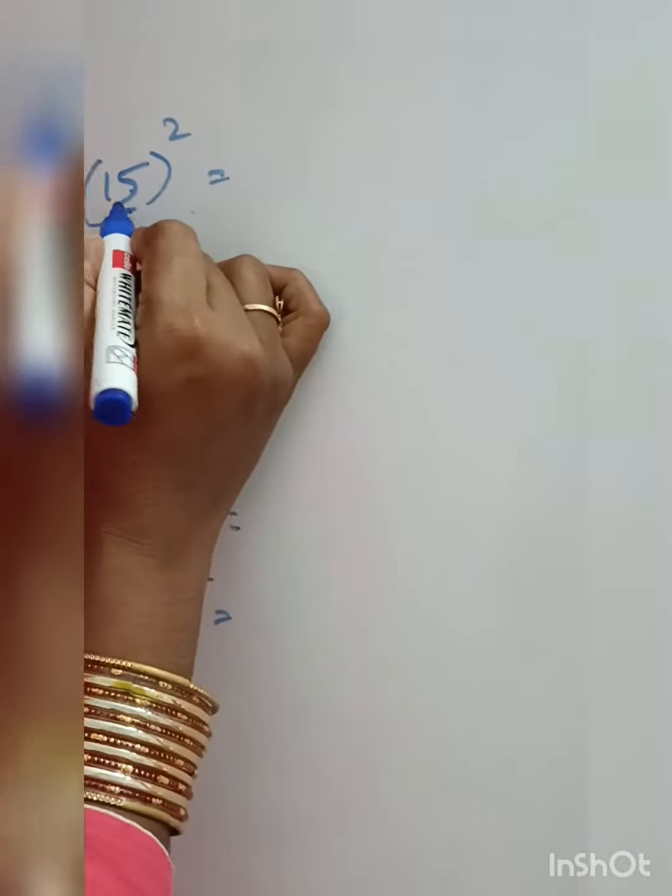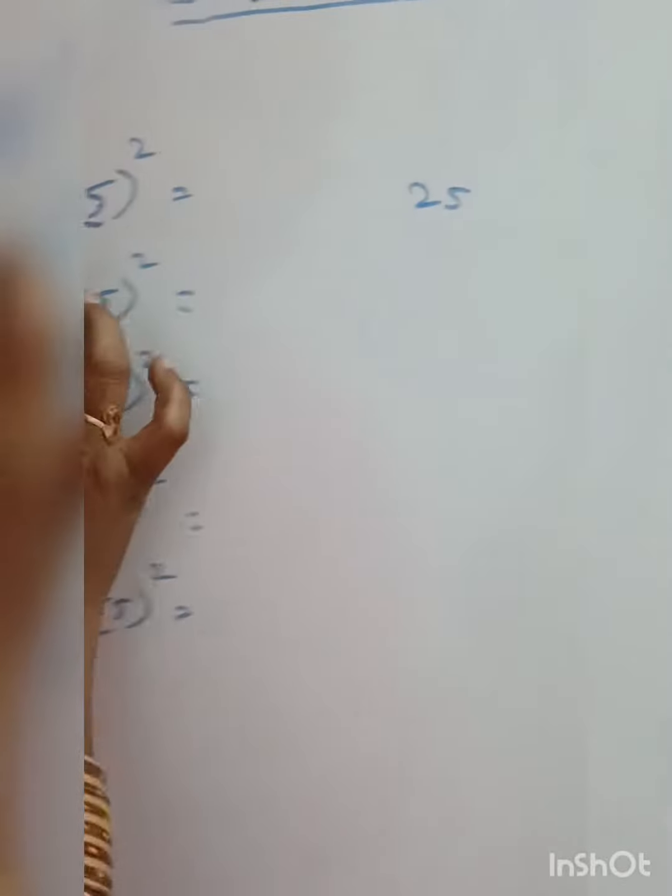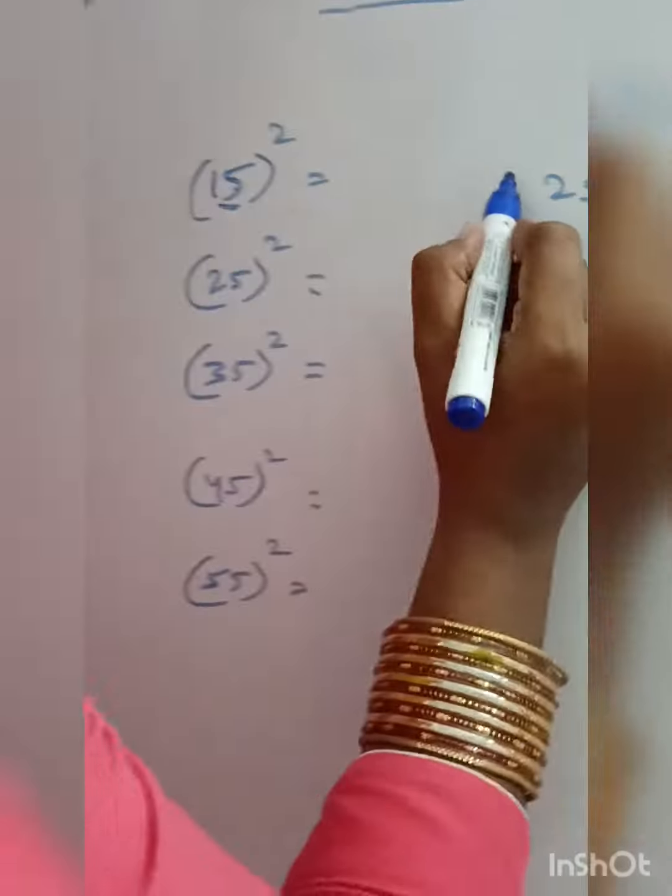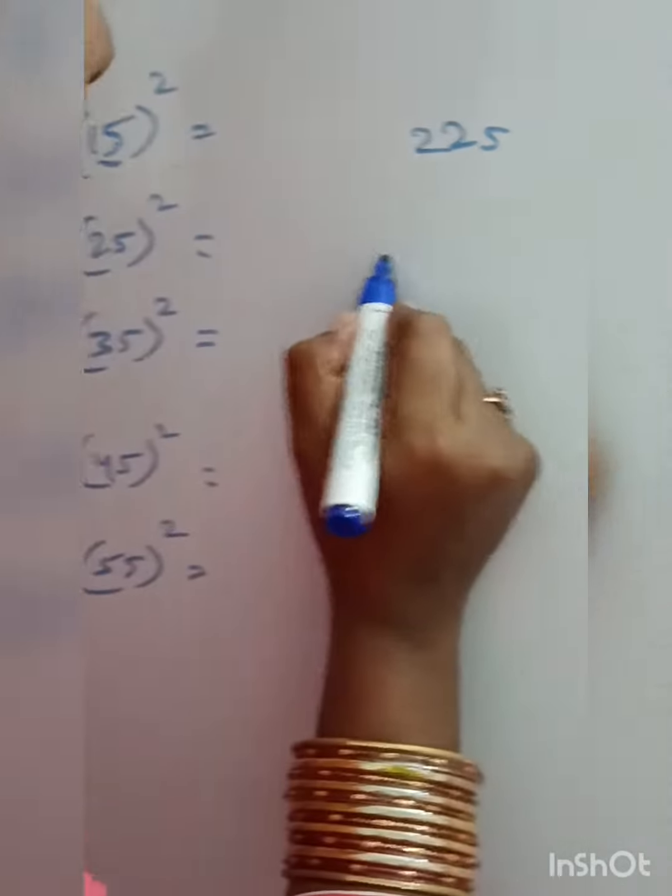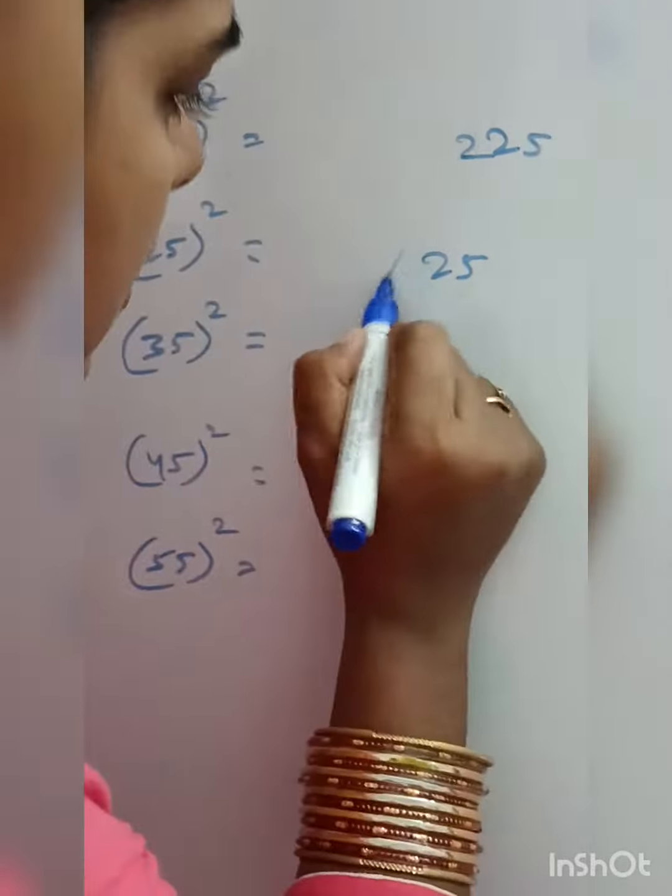5 times 5 is 25, and here we have to take a 1, 2 is 2. Same here, 5 times 5 is 25. 2 is 3 and 2, 2 is 6.